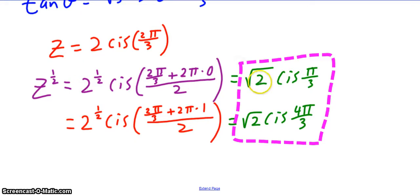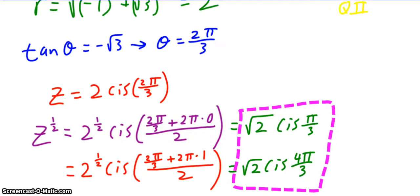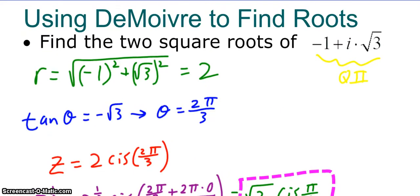Here we're doing radians. So you should end up with root two cis of π/3 and root two cis of 4π/3 as the two square roots of negative one plus i root three.